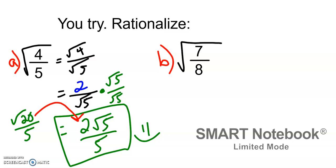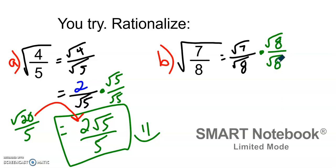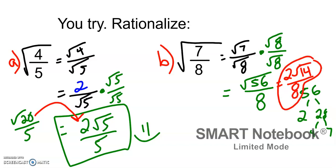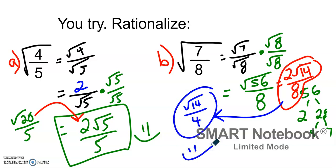For example B, we have square root of 7 over square root of 8. We're going to practice rationalizing, so we multiply the top and denominator by root 8. That gives us the square root of 56 over 8. Breaking down the square root of 56: 56 is 4 times 14, so that turns into 2 root 14 over 8. We can simplify further — the 2 and 8 reduce to 1 and 4 — giving us square root of 14 over 4.